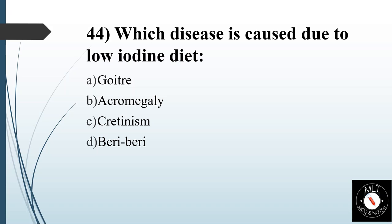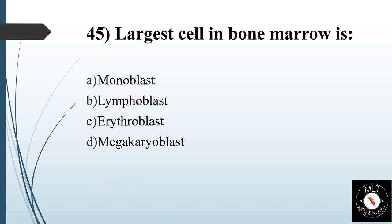Forty-fourth question. Which disease is caused due to low iodine diet? Option A: Goiter. Option B: Acromegaly. Option C: Cretinism. Option D: Beriberi. Answer is Option A: Goiter.